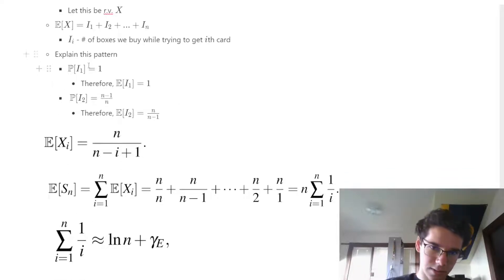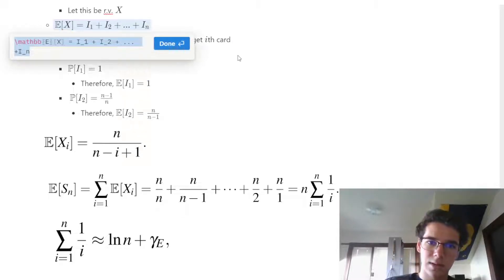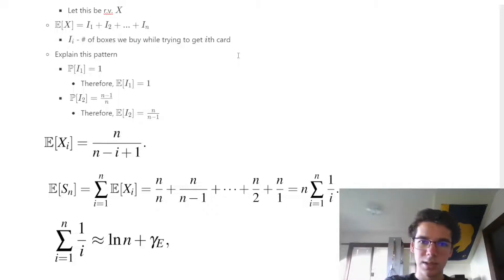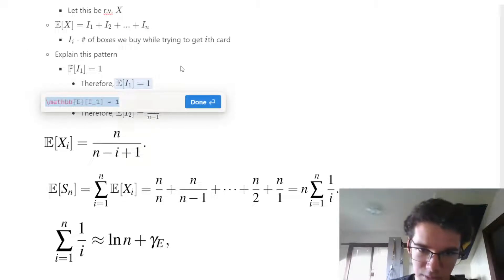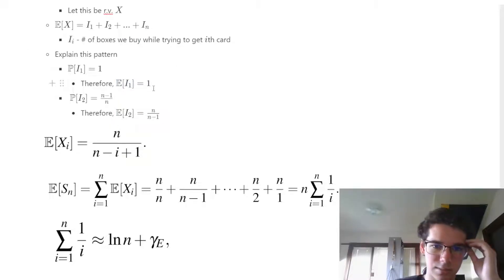If we have zero cards, I_1 is asking how many boxes we need before we get our first card. Clearly we just need to pull one box, because any card we pull is a new card.